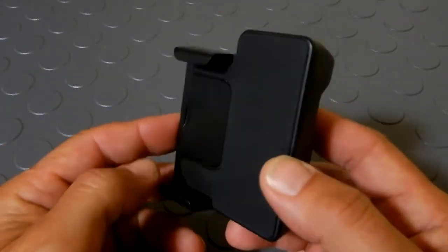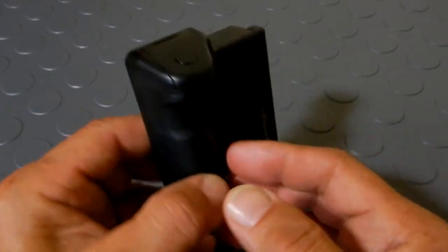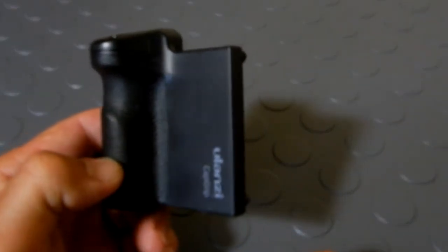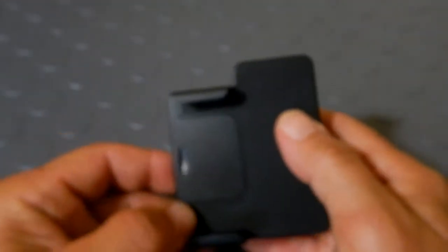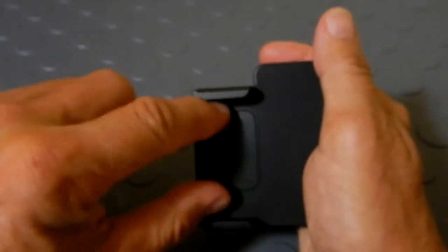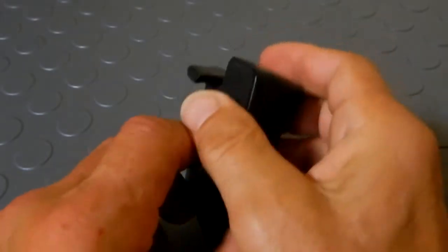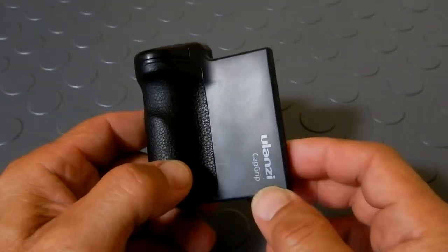What this does is it allows you to put this on your cell phone, and so now you can grip your cell phone when you're using it as a camera or for video. You put the cell phone in here, it gives you a nice grip to hang on to where you're doing your pictures.